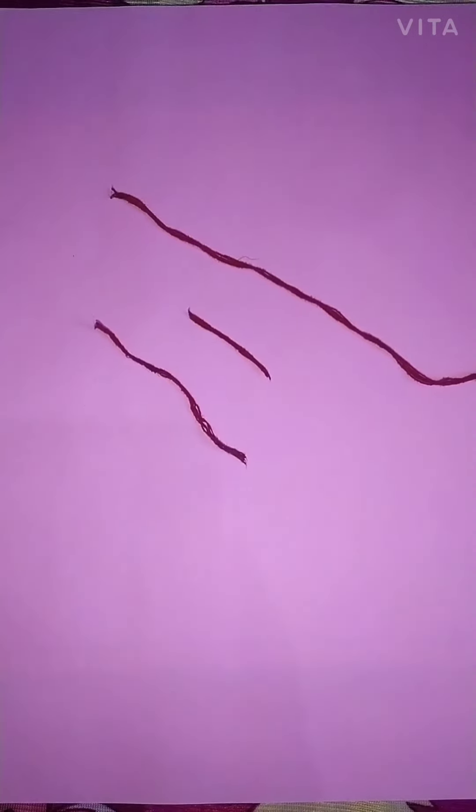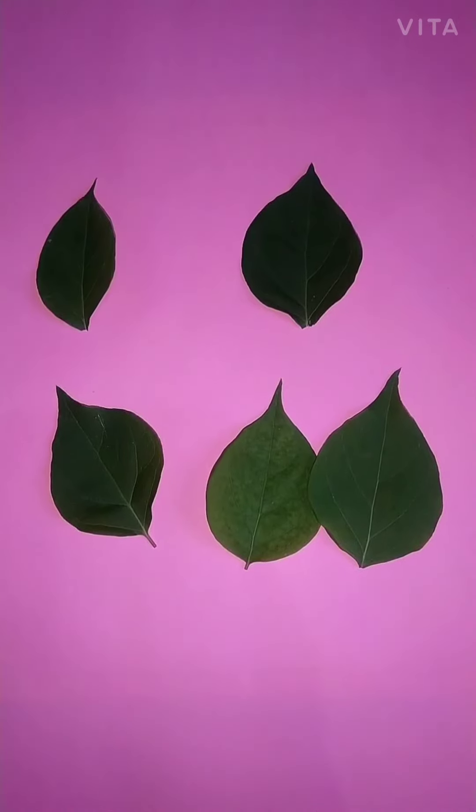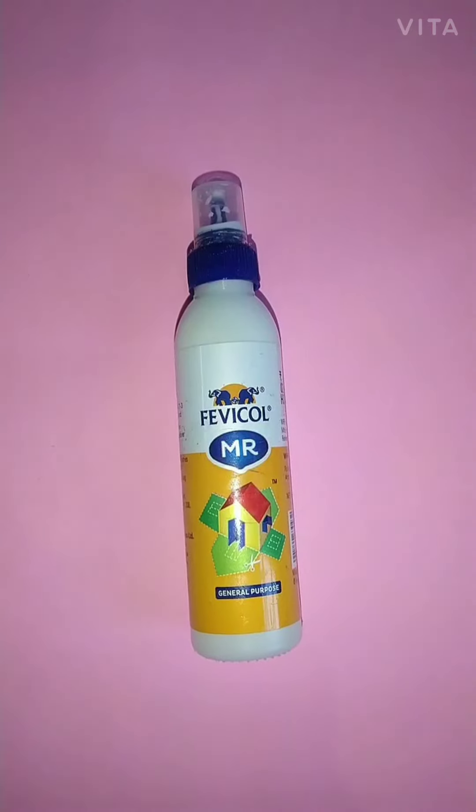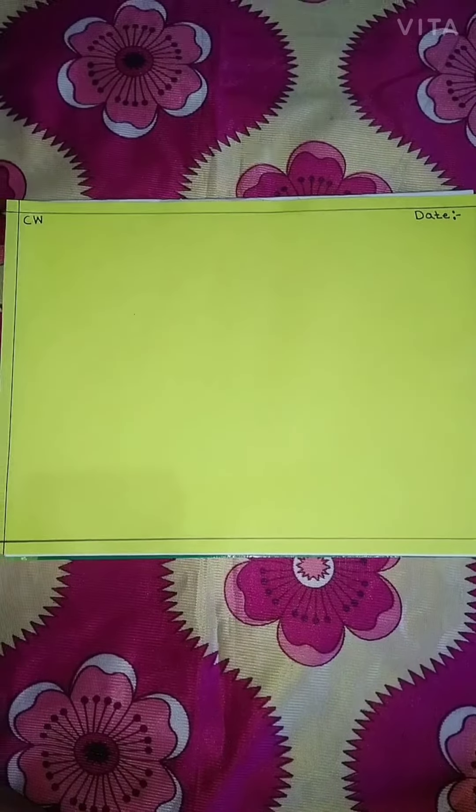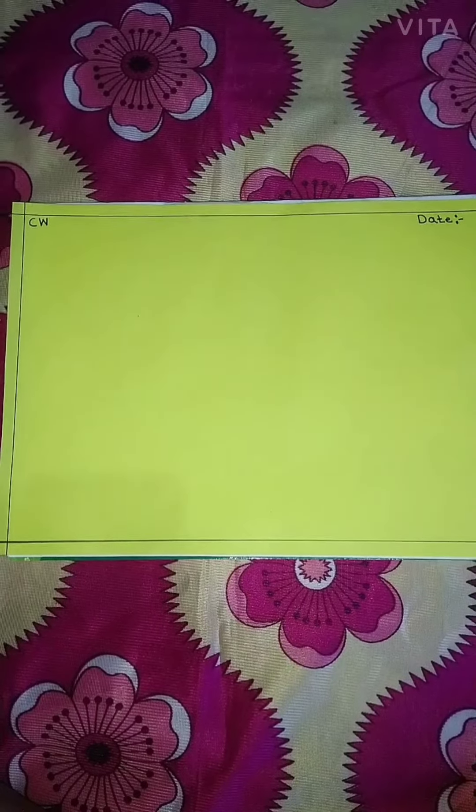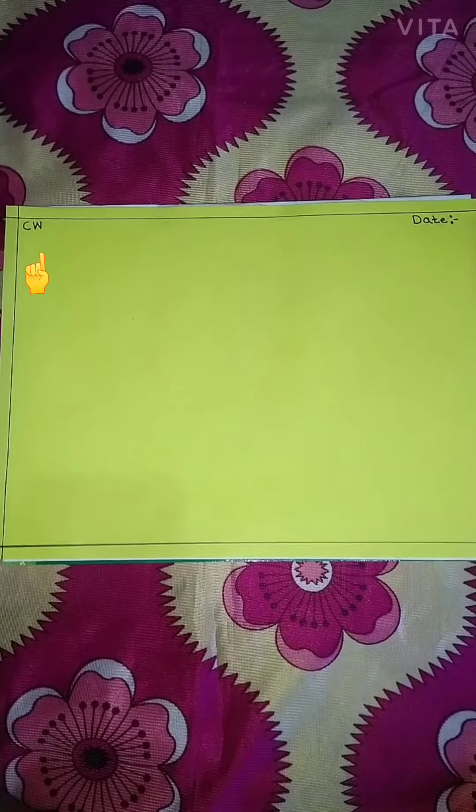So children, during this activity we need some red leaves, baby pollen. Now we will start our activity here. So first of all you will write classwork and today's date.